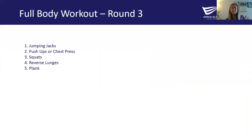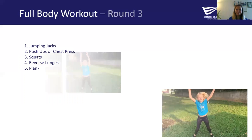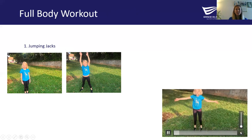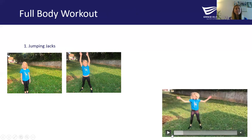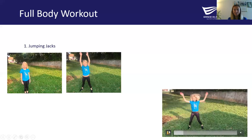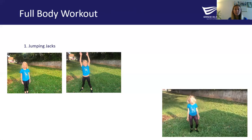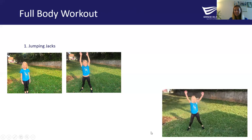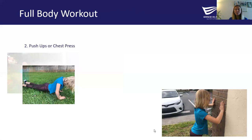We've done two rounds of these five exercises and we're on our third and final round. We just have these last five exercises to do and then we'll do our cool down. If at any time you need to take a break and get some water, go ahead and pause the video and come back whenever you're rested and ready to finish. We've got our jumping jacks for our first exercise of our last round — getting our cardio in, our heart rate up. Pause the video, do your 30 seconds, and then come back.